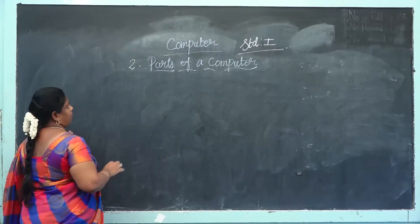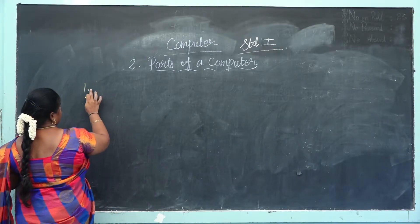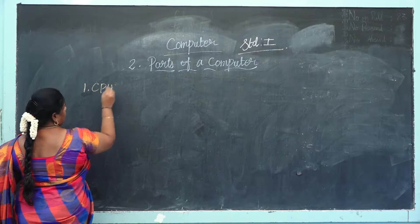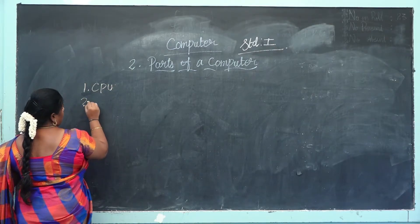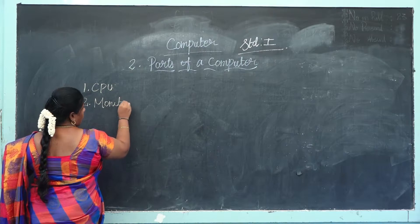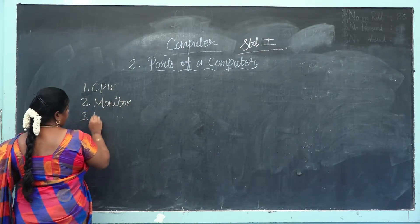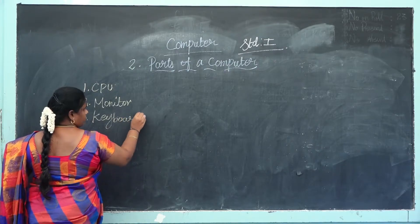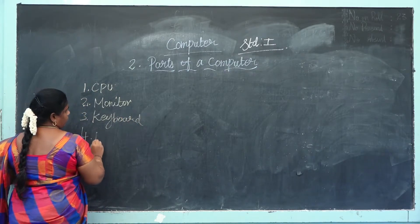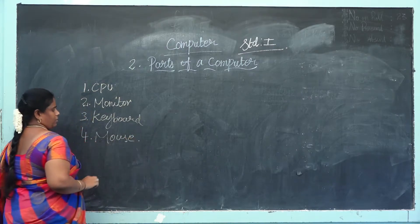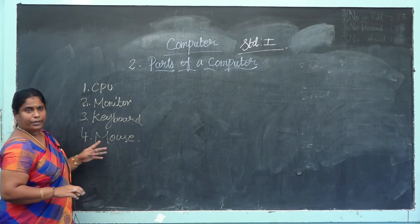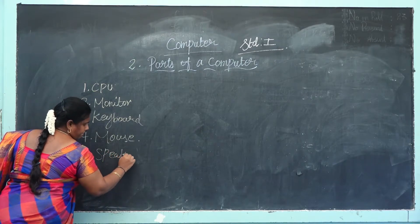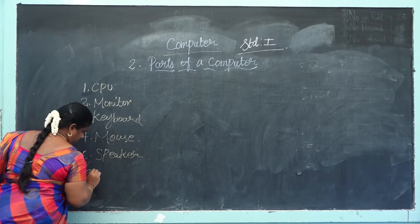What are the parts of the computer? The first part is CPU. Second one: monitor. Third one: keyboard. Fourth one: mouse. What are the additional parts of the computer? Speaker, then printer.